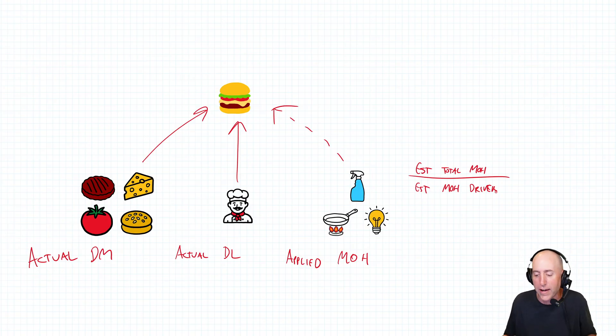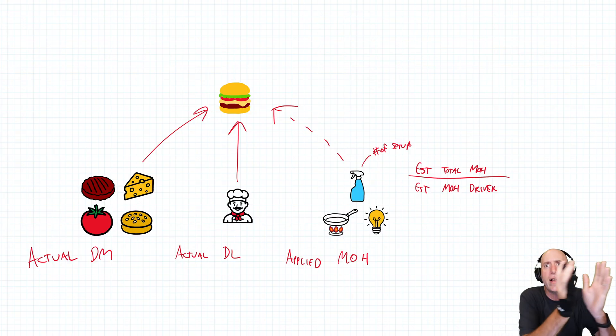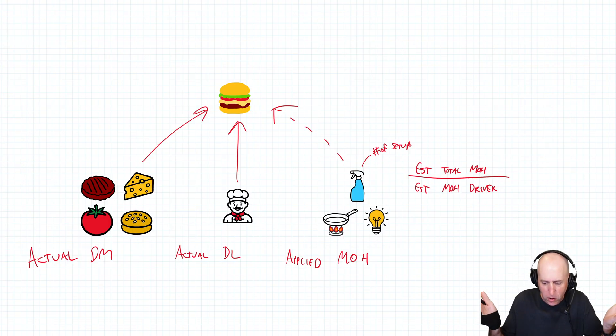We've gone over examples of applying overhead in the past. What activity-based costing brings that's new is it says we have many different types of overhead. Why do I only have one overhead driver? If I look at my cleaning costs, which is definitely an overhead cost, that's driven not by labor hours, but by the number of setups. Every time I set up the kitchen, I have to clean the kitchen. It's definitely not directly proportional to labor hours.